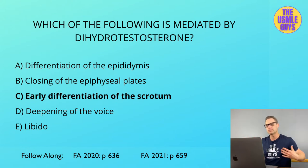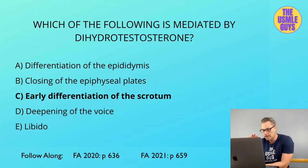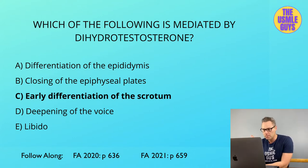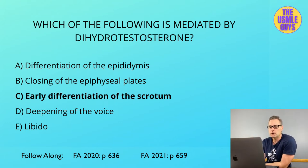Testosterone is needed for a myriad of functions, including differentiation of internal genital structures like the vas deferens, epididymis, and seminal vesicles. At the onset of puberty, it's responsible for growth of the penis, deepening of the voice, sperm development, increased muscle mass, increased red blood cells, closure of the epiphyseal plates, and libido. Low testosterone — hypogonadism — results in decreased libido.